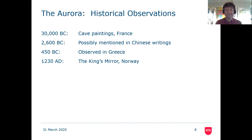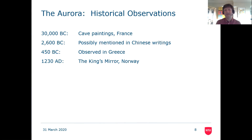If we get to 1230 AD, then the King's Mirror — a text published in Norway — gives some lovely descriptions of the Northern Lights and starts to give some ideas about what might cause them. The King's Mirror is an absolutely fascinating text in two parts: one part about how one should behave when one goes to the King's Court, which is of great interest to historians, and the other half about the best scientific ideas around the world at the time. Here is a translation talking about the Northern Lights and giving a description of them.